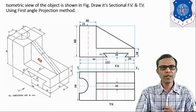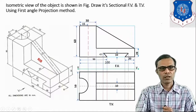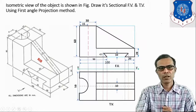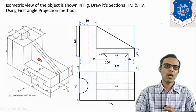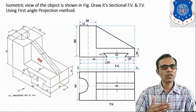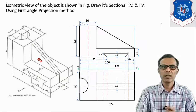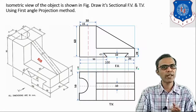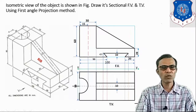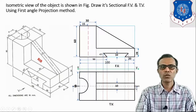Now we have to consider the sectional front view. The position of the cutting plane is given in the object, shown by a capital letter. Sectional front view with arrows A and B indicates that this object is being cut. The cutting plane line (CPL) format is: long chain elsewhere but thick at ends, with two capital letters and two arrowheads. Since the front view is in section, the CPL is drawn in the top view with both ends thick, two arrowheads, and two capital letters A and B.